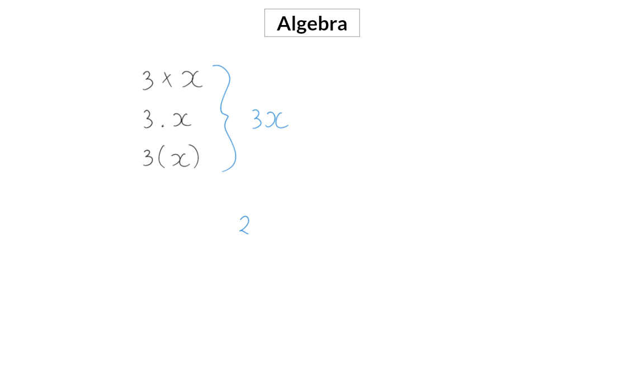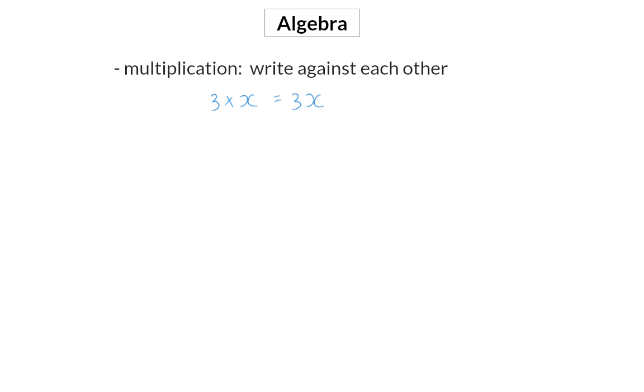Or, if we have 2xyz, this means 2 times the value of x times the value of y times the value of z. In algebra, we prefer using the method where we write everything against each other, because it is quick and effective. Another general practice used in algebra is when we have more than one letter, we always write them in alphabetical order.